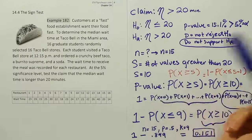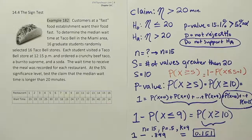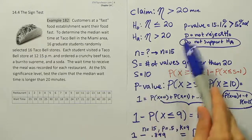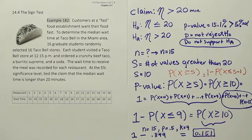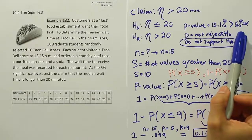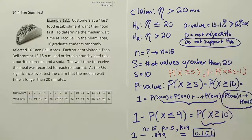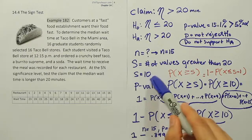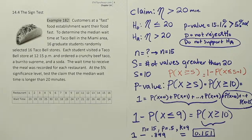The sign test is a very conservative test — it doesn't like to overturn the null hypothesis. It takes overwhelming evidence to reject H0. S would have to be even larger before we could reject at a reasonable alpha like 5%. While the evidence may have been strong enough in another procedure, it won't be here. So it's possible the wait really is longer than 20 minutes, but this hypothesis test is unable to show it because it's a weak test.